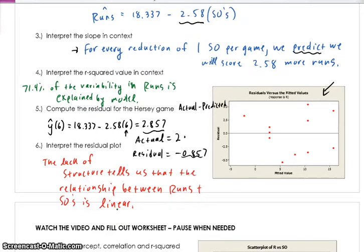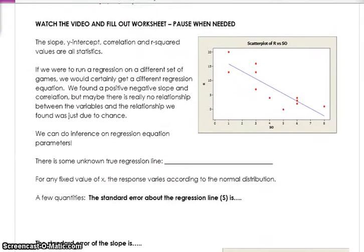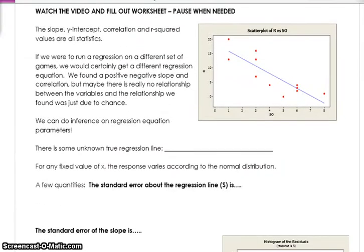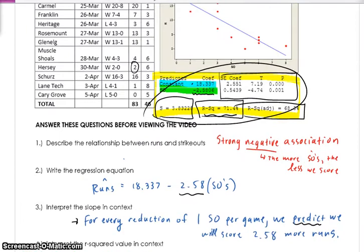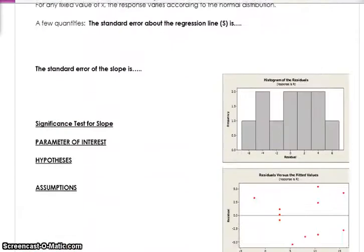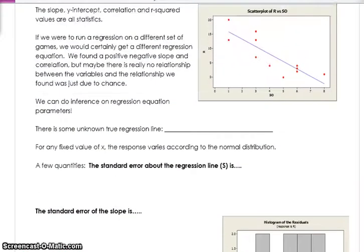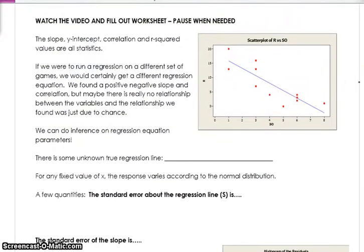All right. So that's nothing new, all that stuff. Pretty much review. If we move on to the back, and we kind of read this. The slope, the y-intercept, the correlation, and the r-squared. All these things that we get from this output, those are just statistics. If I were to run a regression on perhaps 11 different games, I would get a different value for the slope, the y-intercept, the correlation, and the r-squared.